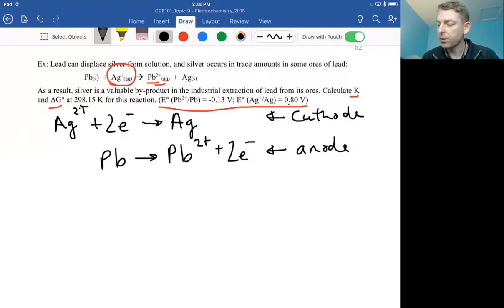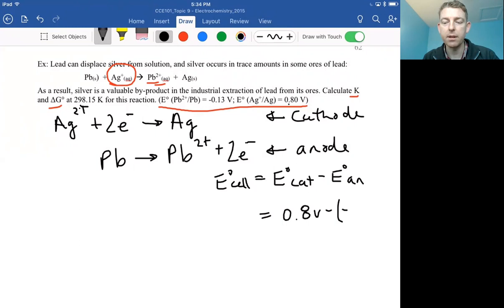Okay, so right off the top, we can calculate our E cell, our standard cell potential. That's equal to the standard for the cathode minus the standard reduction potential for the anode, which is given to us in the question. So that's going to be cathode is silver, so 0.8 volts minus negative 0.13 volts, and we have 0.93 volts on the cell.